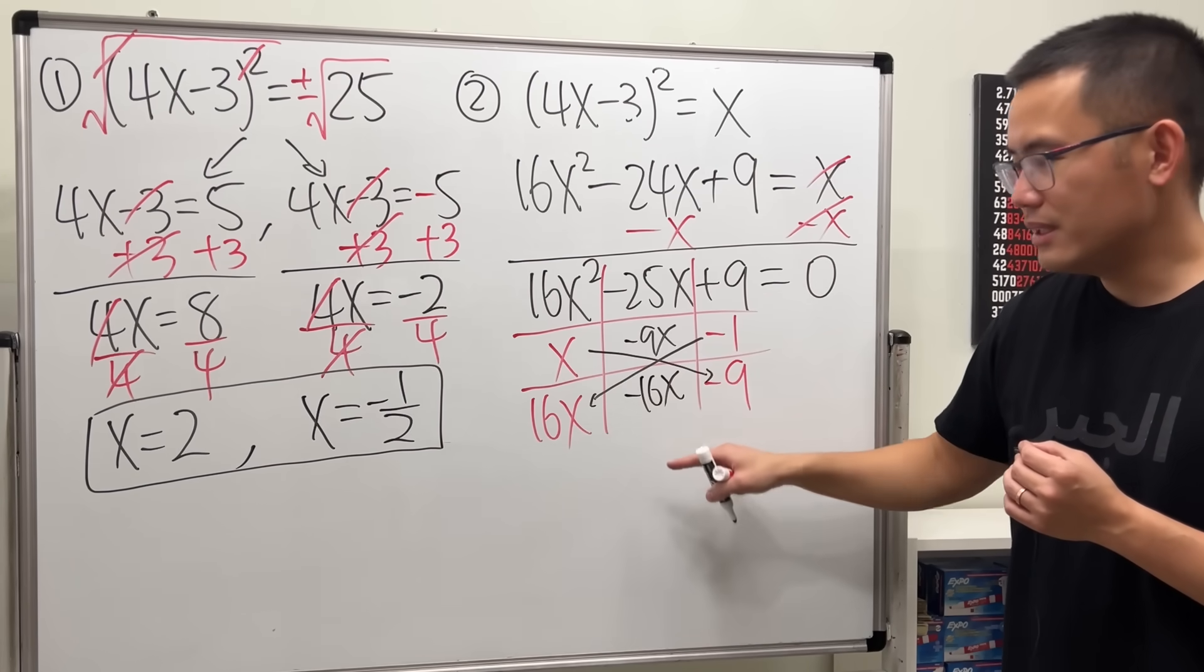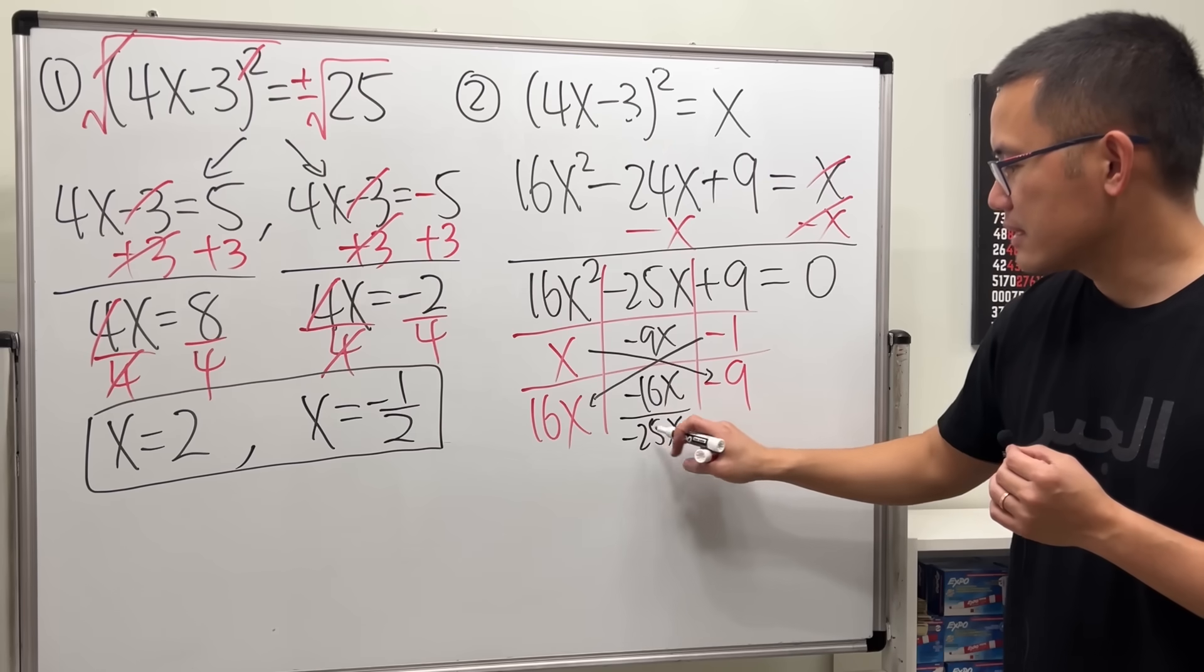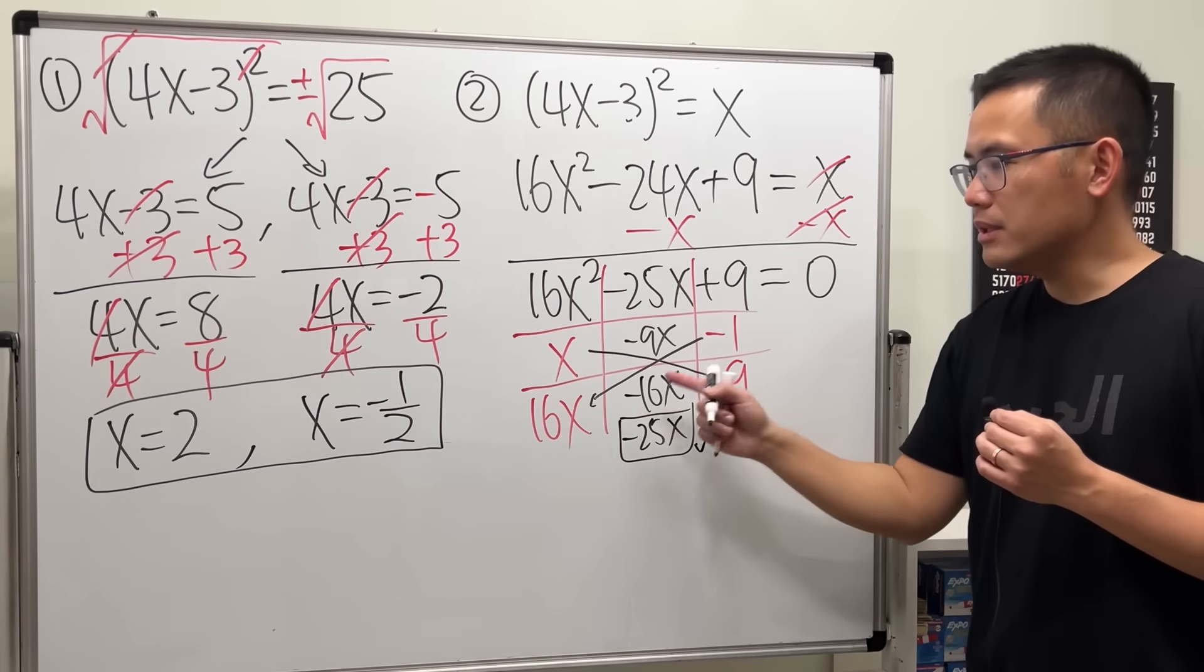we get negative 16x. So, together, you see, they add up to be negative 25x. So, that's the correct combination.